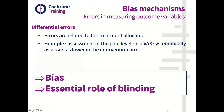The most important issue for randomized controlled trials is differential errors — errors related to the treatment allocated. For example, the level of pain is systematically overestimated in the control group and underestimated in the experimental group. This is a differential error and raises concerns for bias. To avoid this type of bias, we rely mainly on blinded outcome assessment.